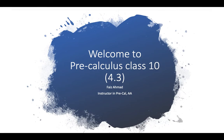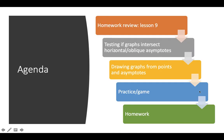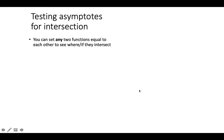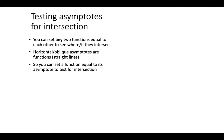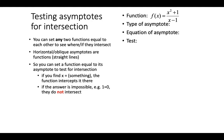Hello everyone, welcome to class 10. This is the second class of section 4.3 on graphing rational functions. The topics for this class are: testing if a graph intersects horizontal or oblique asymptotes, drawing graphs from points and asymptotes, and some practice.